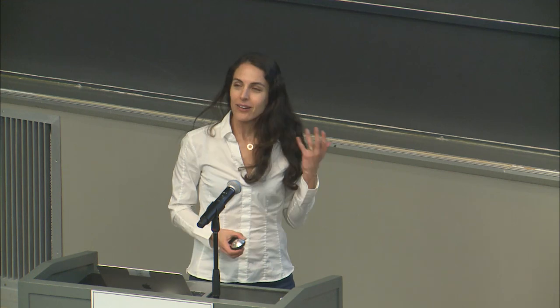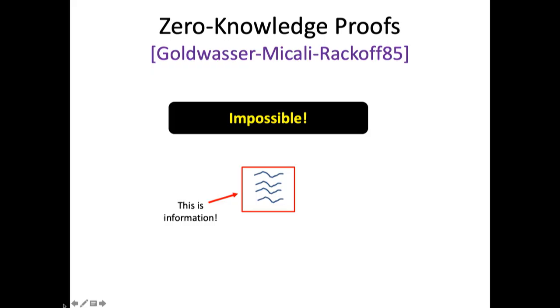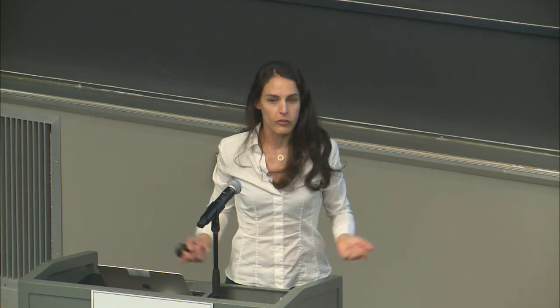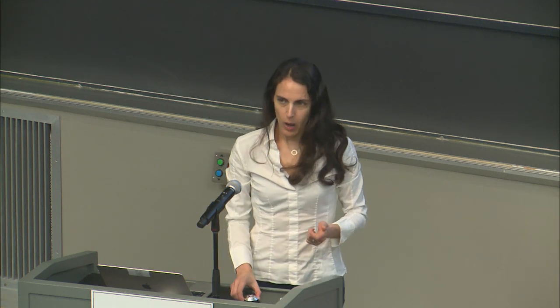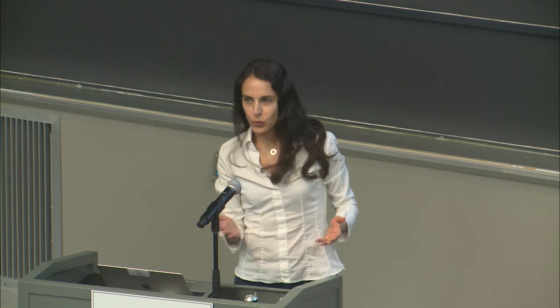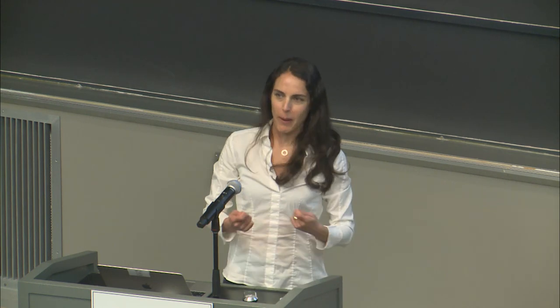Shortly after, they realized that's impossible. Why? Because a proof on its own — just the mere fact that there exists a proof — is information. You have something you can check and it tells you the statement is true. This is on its own some form of information. So it's impossible. What do we do when things are impossible? We bypass.